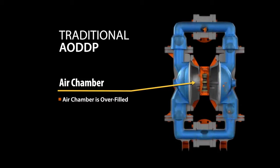Once the shaft and diaphragms have reached the end of their stroke, a mechanical mechanism triggers the end of the stroke, finally shutting off the air supply to that air chamber, signaling the air valve to shift and dump any excess air left in the filling air chamber.